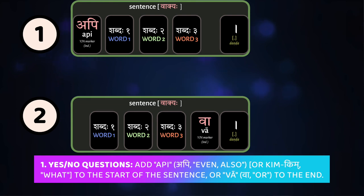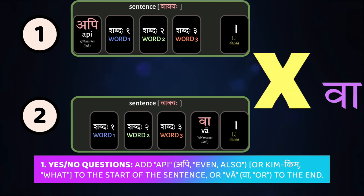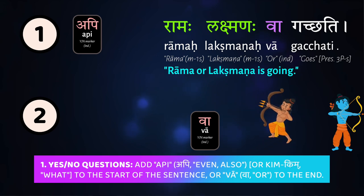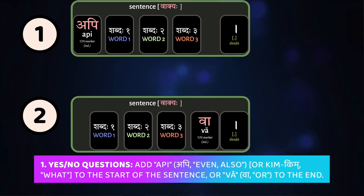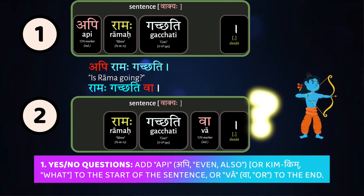The other way to ask a yes-no question is to add vā at the end of a sentence. Remember, vā usually means 'or,' and like api, it comes after the noun that is being 'or-ed.' So if you say 'Rāmaḥ Lakṣmaṇaḥ vā gacchati,' it means 'Rāma or Lakṣmaṇa is going.' But like with api, if you move vā to the end of the sentence, it turns the whole sentence into a yes-no question: 'Rāmaḥ gacchati vā' — is Rāma going?